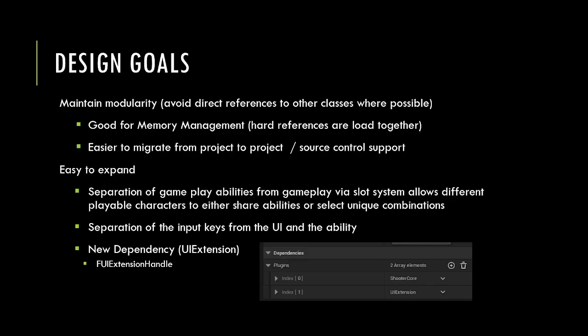Let's start with a couple of the design goals. One of the things we're trying to do is maintain modularity. To do that, we need to avoid direct references to other classes so that two major things can happen. One, we don't get into situations where we're loading all the hard references into memory at the same time. If I have 10 abilities all hard linked together, all 10 get loaded as soon as you reference the first one — and if that ability hard links into UI elements and game objects, they all get loaded as well.